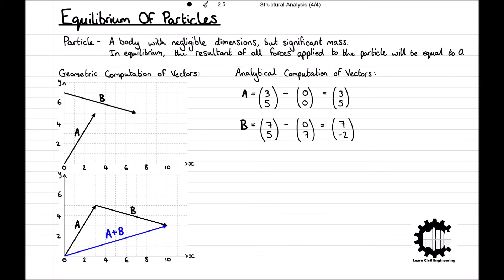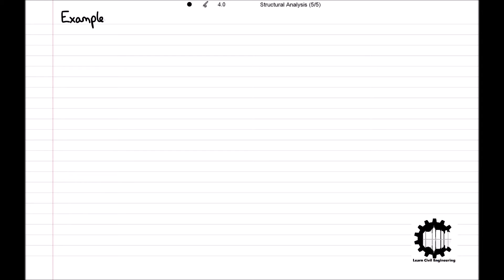Therefore, to get the resulting vector, we sum the magnitudes of vectors A and B. Summing the magnitude in the x direction first, we have 3 plus 7, so the resultant magnitude in the x direction is equal to 10. And then doing the same for the y direction, we have 5 plus negative 2, resulting in a magnitude in the y direction of 3. As we said at the beginning, for a body to be in equilibrium, all forces applied to the particle must be equal to zero, and therefore the vectorial sum of all forces applied must be equal to zero. Let's have a look at an example problem to apply what we have just learnt.